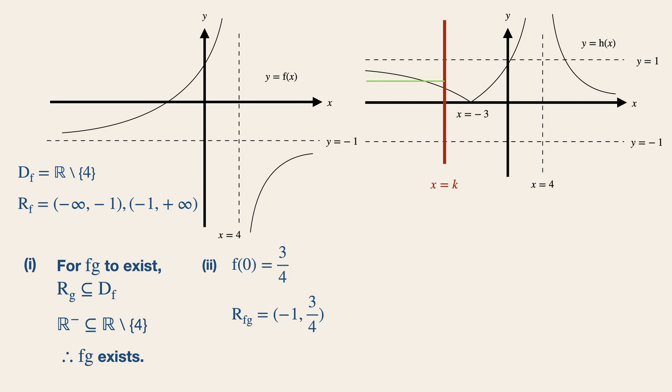But this is not enough, we need to answer the question. So slide it further right to get the maximum value of x which gives this function a one to one. Therefore, in this case, the greatest value of k that makes this function one to one is minus three.